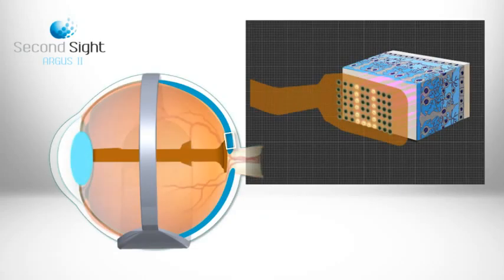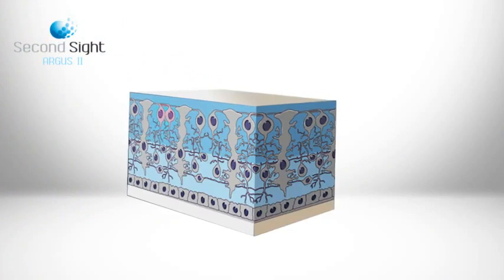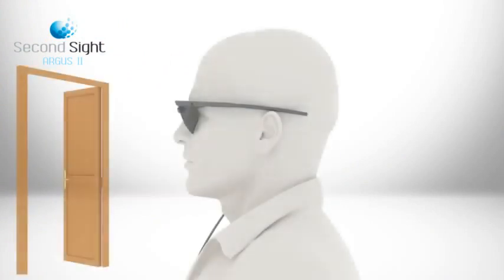These pulses stimulate the retina's remaining cells and are transmitted down the optic nerve, conveying visual information to the brain which perceives patterns of light.